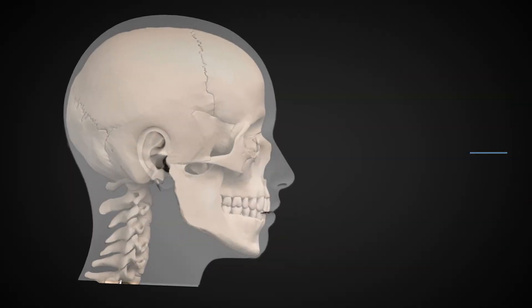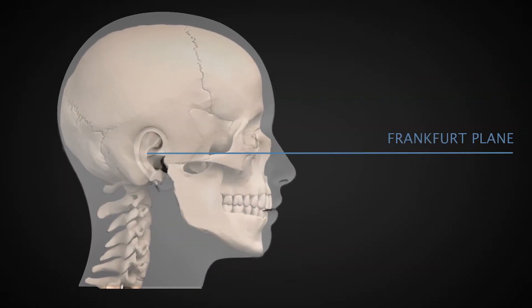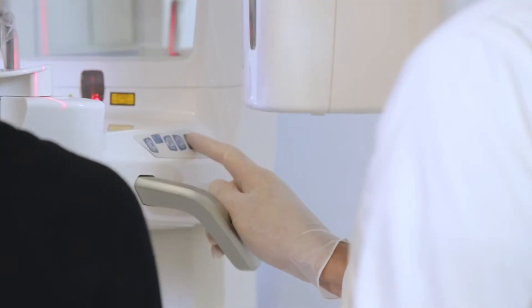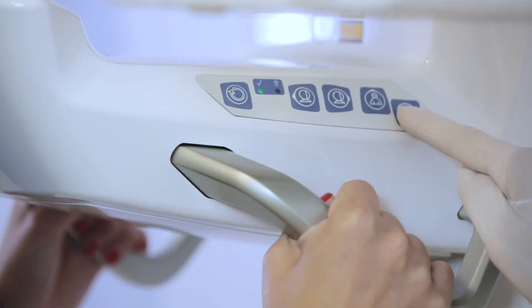To adjust the head tilt angle and obtain the correct positioning of the Frankfurt plane, the dentist uses the up and down keys and the wheel to adjust the height of the laser.